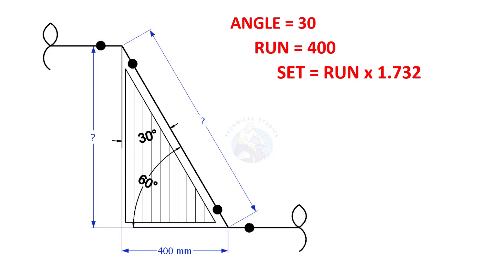Set is run multiplied by 1.732. Here 1.732 is a constant. Let us calculate. 400 multiplied by 1.732 is 693. So the value of set is 693.